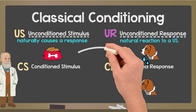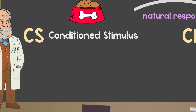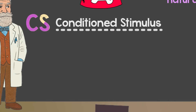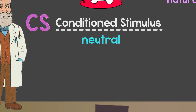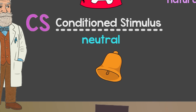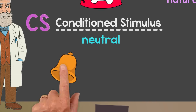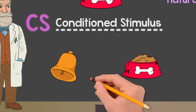The dog didn't have to learn to drool — it just naturally does. Now for the new stuff: the conditioned stimulus, or CS. That's something neutral, something that didn't mean anything before, like the sound of a bell. At first, the dog didn't react to the bell at all, but after the bell was paired with the food over and over...